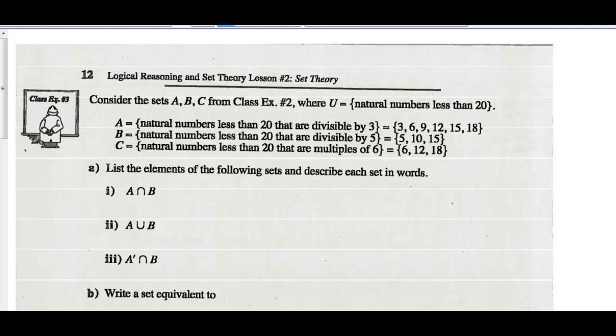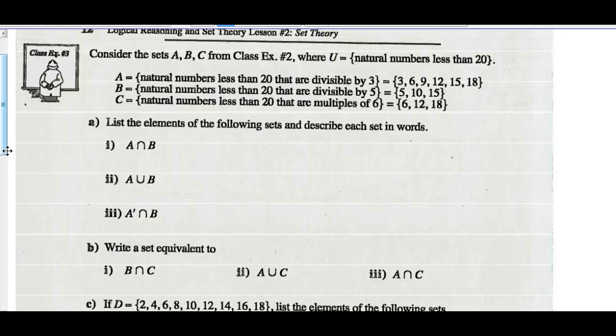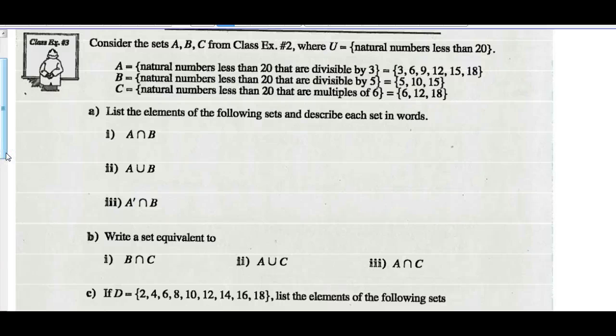Example 3. Consider sets A, B, C from class example 2 where the universal set was the natural numbers less than 20. A are those natural numbers less than 20 divisible by 3. B is the natural numbers less than 20 divisible by 5. And C is the natural numbers less than 20 which are multiples of 6. So we've got those listed. Based on the terminology, list the elements of the following sets and describe each set in words.